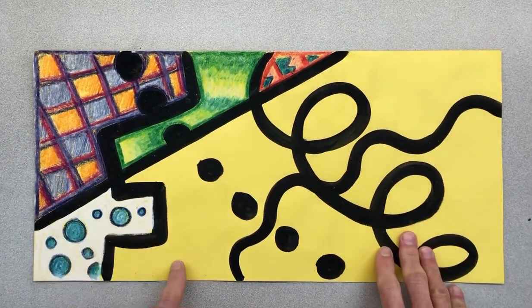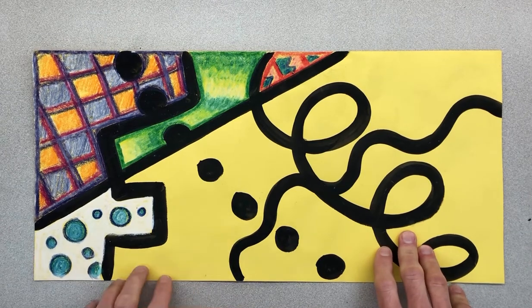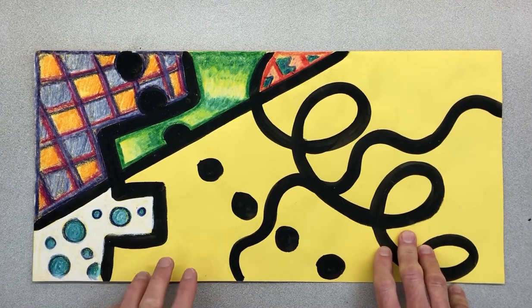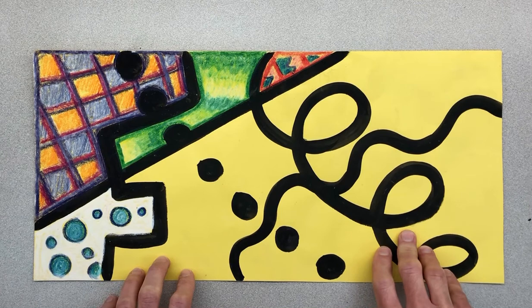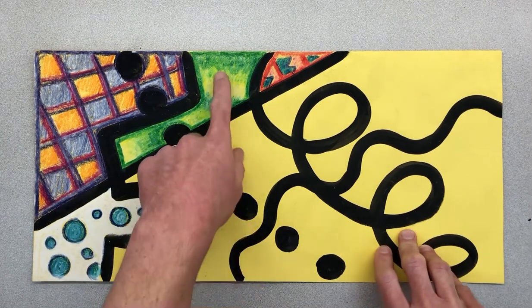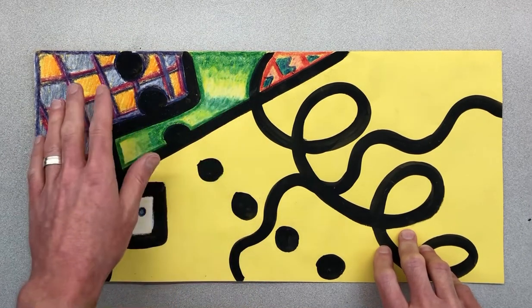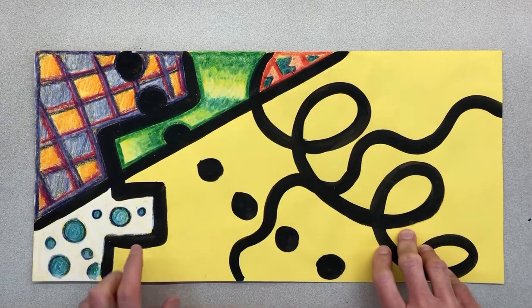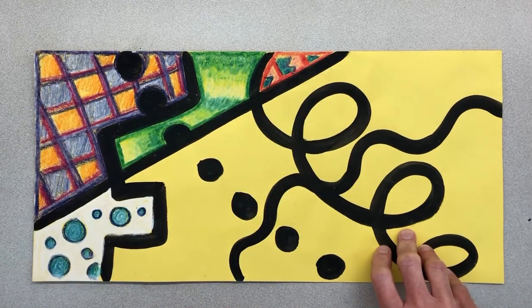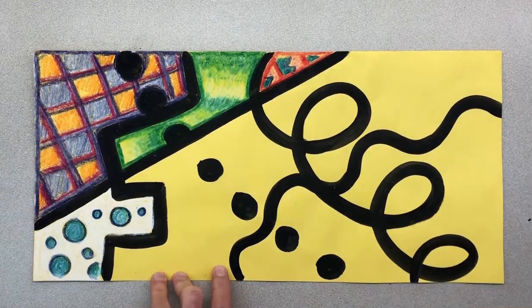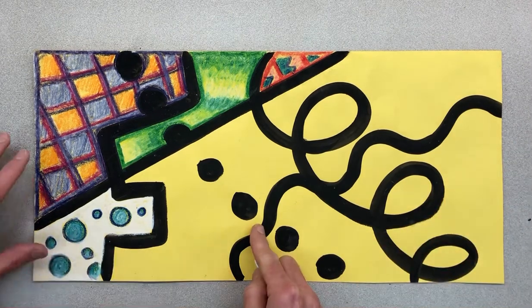Well students, we're going to keep working on these abstract pieces of art. I would like you to make sure you're using a variety of different things, whether that's shading and color mixing, using line or pattern. I'm going to do an example of how I did these dots here.